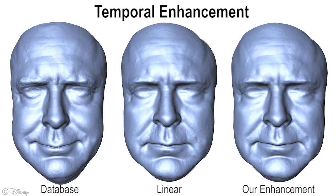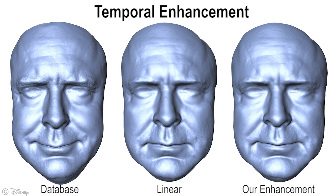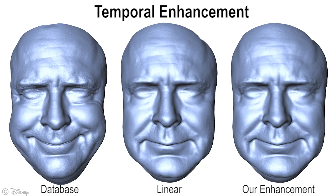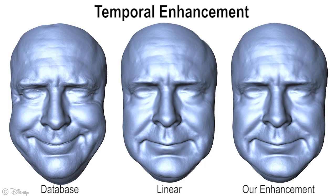Here we show an example of data-driven temporal enhancement for a smile sequence in slow motion. Linear interpolation of two keyframes, shown in the center, doesn't capture the correct dynamics of this actor. The closest matching database sequence is shown on the left, which of course does contain the correct dynamics. The smile starts fast and ends slowly. On the right, we show the enhanced result. Notice that we maintain the user's artistic intent of producing only a half smile, but the dynamics now match the database.